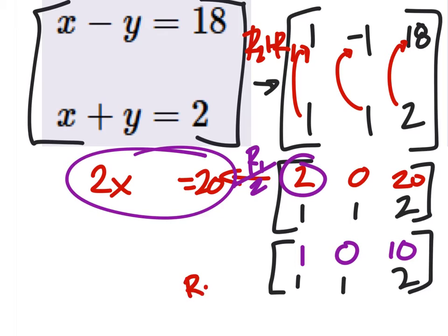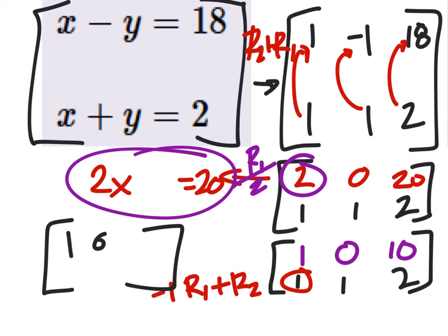So if I took row 1, multiplied it by negative 1, and then added it to row 2, then I can get a 0 right here, which is what I need. You guys remember that? We're trying to get 1, 0, 0, 1 right here, and that tells us what x and y are.